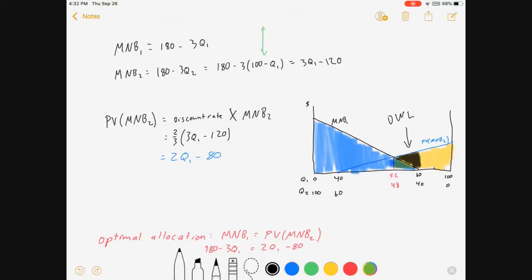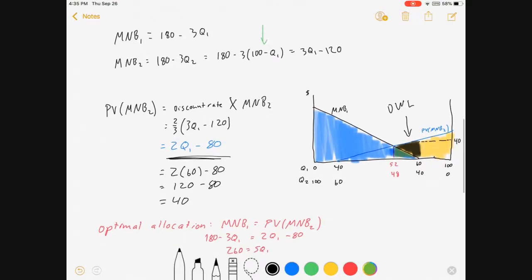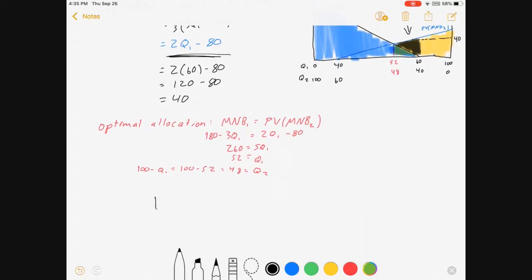Now I could do some calculations. Like I could figure out the deadweight loss. For instance if I wanted to calculate the area of that triangle, I would just need to find the height of it. I already have how far across it is on the bottom. I plug this quantity into my PV MNB curve. Why the 60? Well it's because my present value of MNB is measured in terms of Q1. So 2 times 60 minus 80 equals 120 minus 80 is 40. So I know that this thing is 40. So I can calculate deadweight loss then. One-half times 60 minus 52, it's 8 across the bottom, times 40. It's going to be 160.